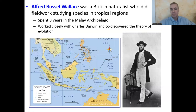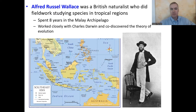To introduce zoogeography, we have a story about a person who did zoogeography in the field: a guy named Alfred Russell Wallace, who was a British naturalist who lived right about the same time as Charles Darwin. He knew Darwin very well, and they discussed many theories together.